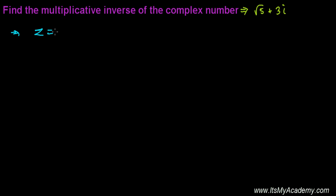Let me suppose this complex number Z is root 5 plus 3i. So the multiplicative inverse of this complex number is 1 over Z, which is 1 over root 5 plus 3i. We'll multiply and divide by the conjugate of this. The conjugate is root 5 minus 3i.